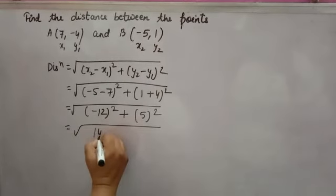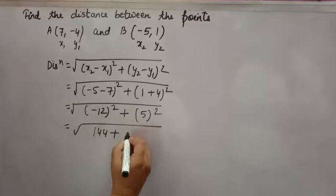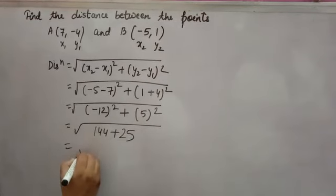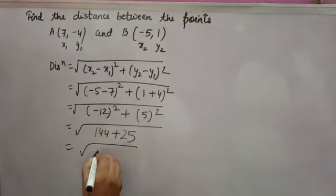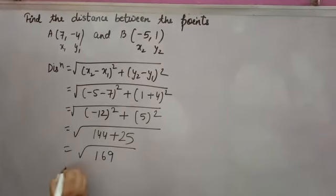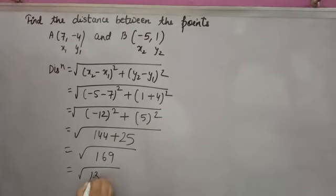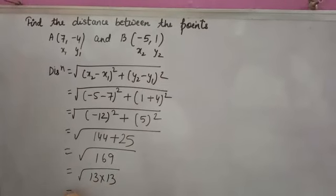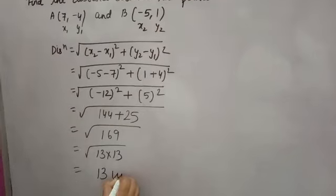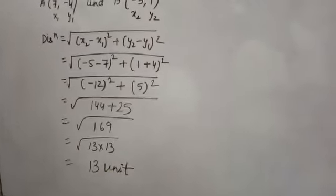Squaring: minus 12 squared is 144, and 5 squared is 25. So 144 plus 25 equals 169, which is 13 times 13. Therefore, the answer is 13 units.